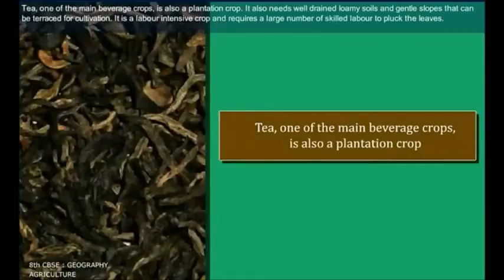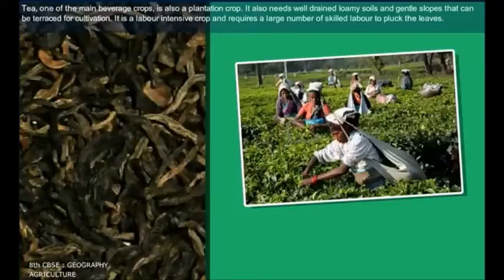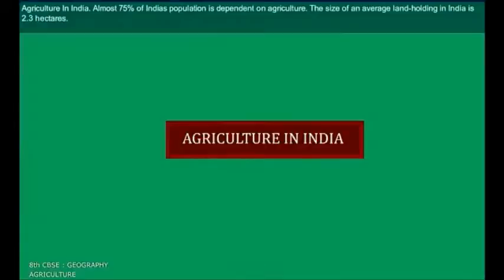Tea, one of the main beverage crops, is also a plantation crop. It needs well-drained loamy soils and gentle slopes that can be terraced for cultivation. It is a labor-intensive crop and requires a large number of skilled laborers to pluck the leaves.